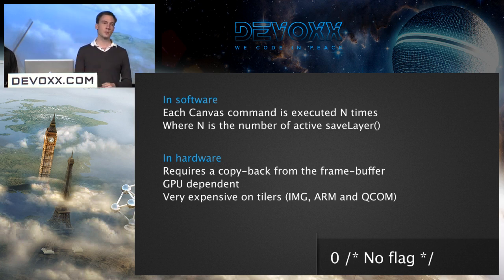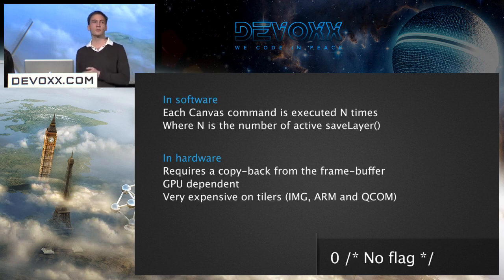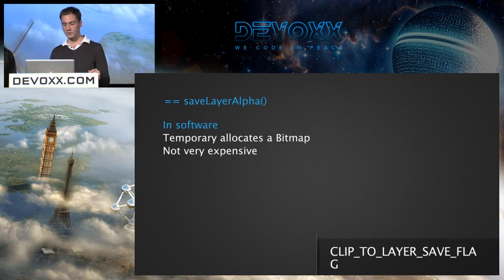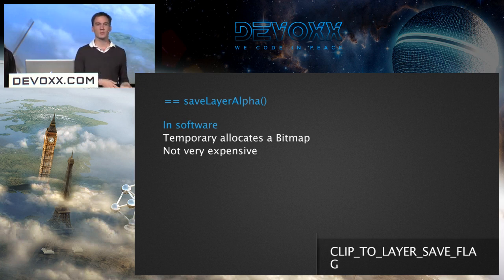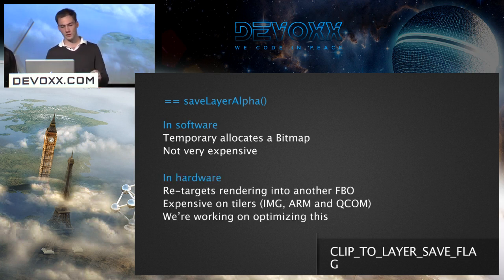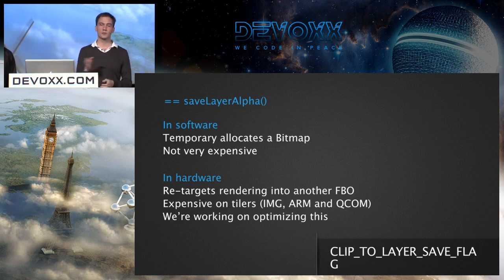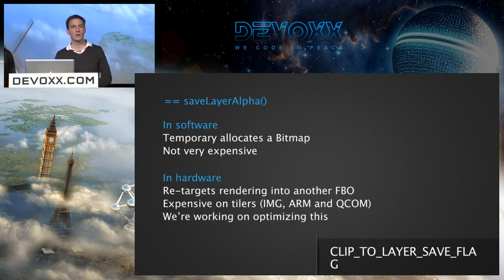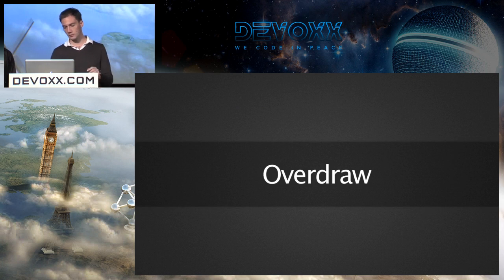This is one reason why on some devices we now disable the real fading effect in list views. If you have a Nexus 7 you'll see the fade effect; if you have a Nexus 10, you will not. If you pass the flag CLIP_TO_LAYER_SAVE_FLAG, the behavior is exactly the same as saveLayerAlpha — we create a temporary buffer and draw into it. In software that's not terribly expensive; in hardware we have to retarget the GPU to a new rendering target called an FBO, which is extremely expensive on some GPUs, especially from IMG, ARM, and Qualcomm. We've done optimizations in 4.2 to make that faster and have more coming. Try to be careful with the SaveLayer API.